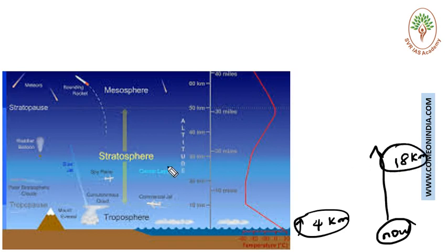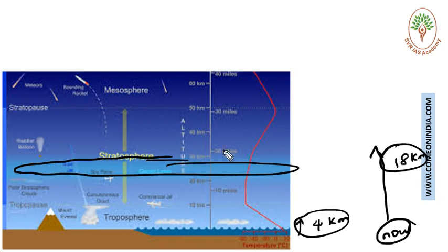As already we discussed, ozone layer is located on the lower portion of the stratosphere, where black carbon interacts with ozone, which leads to ozone depletion.